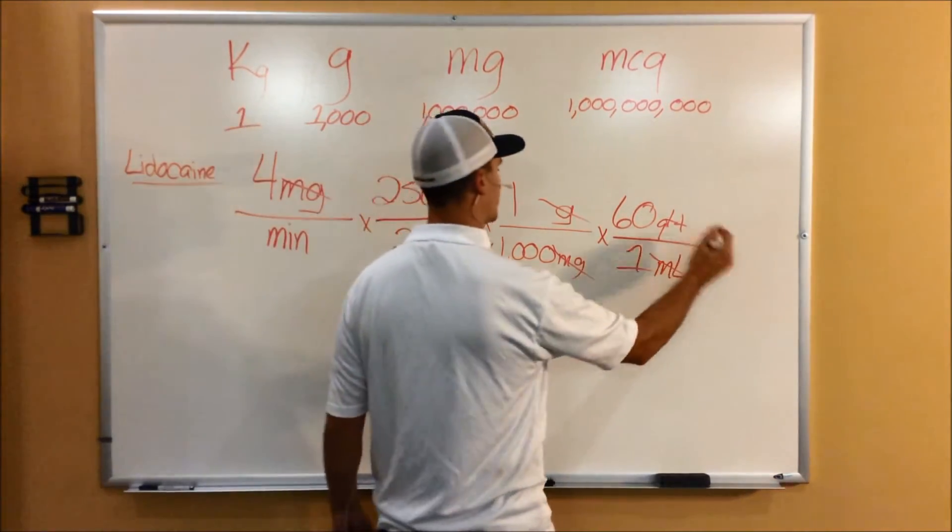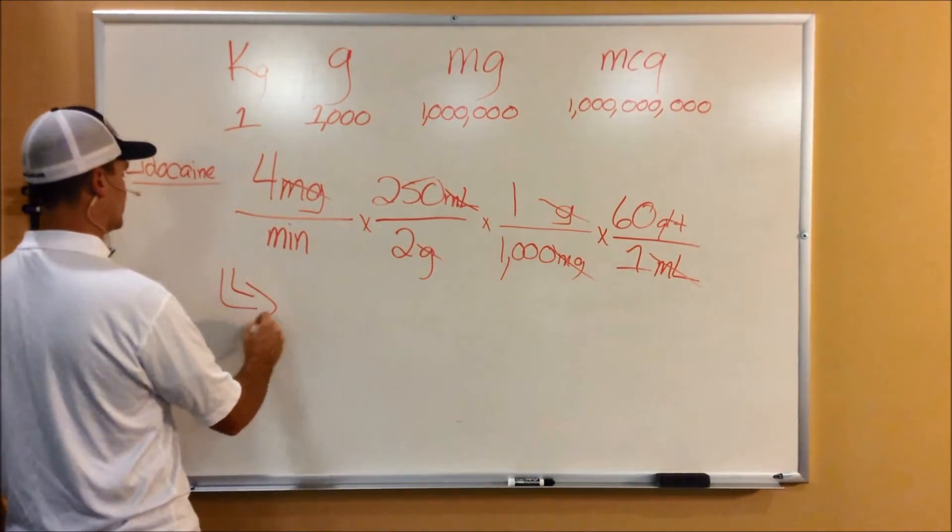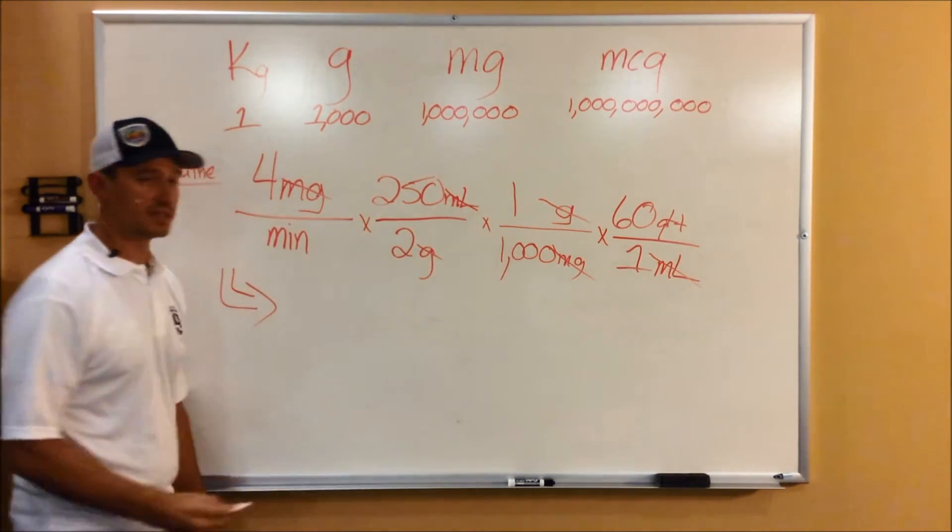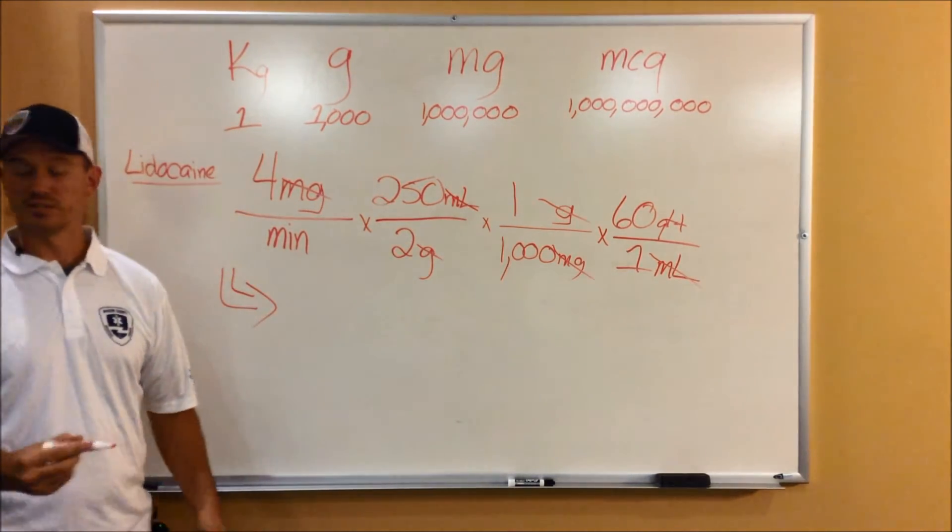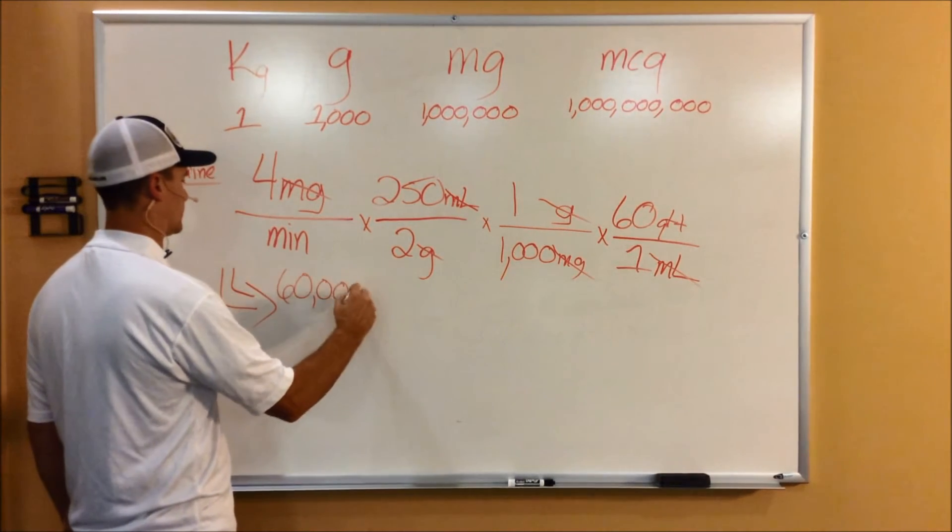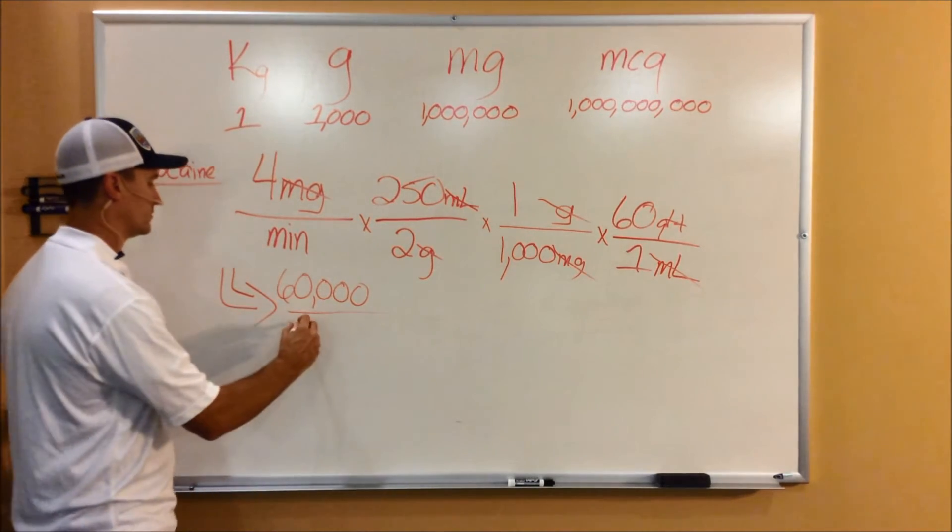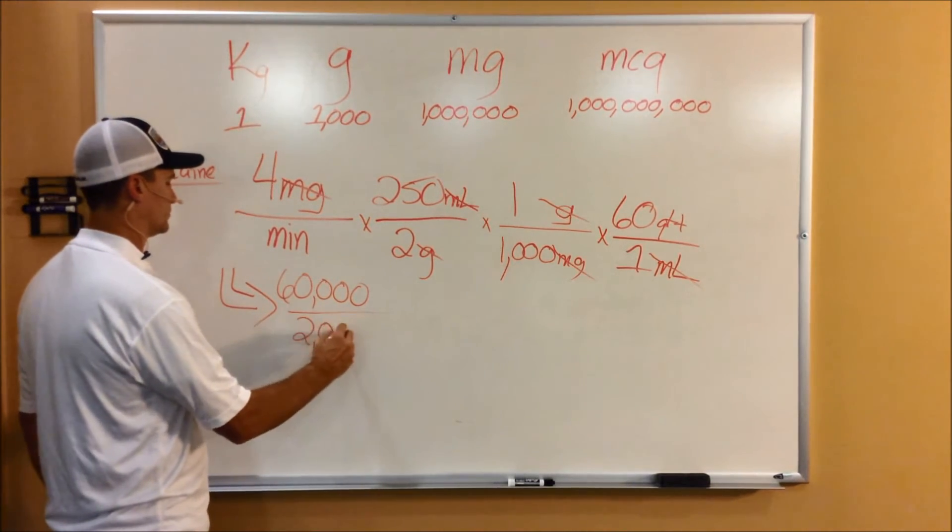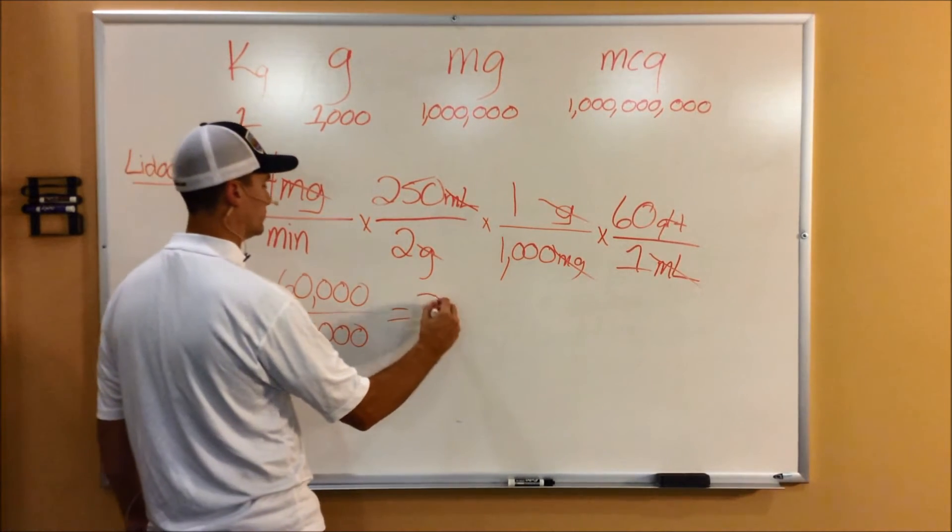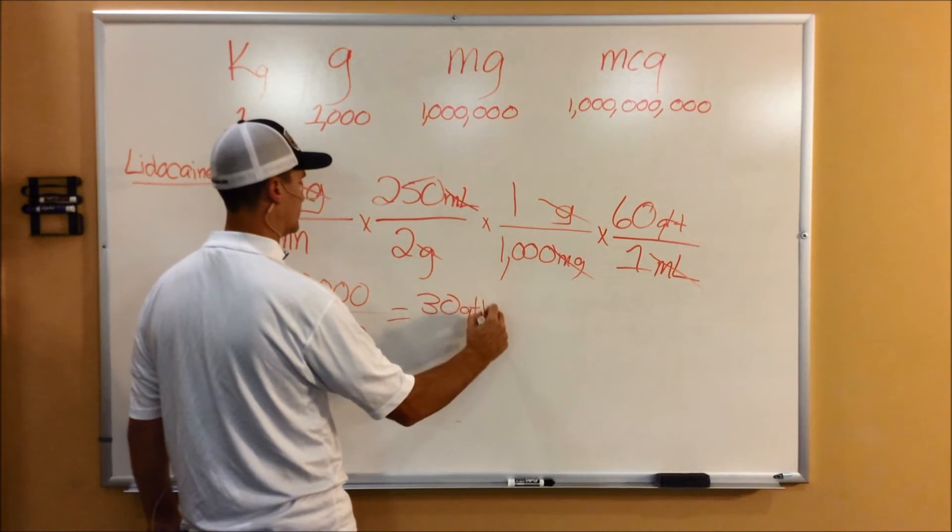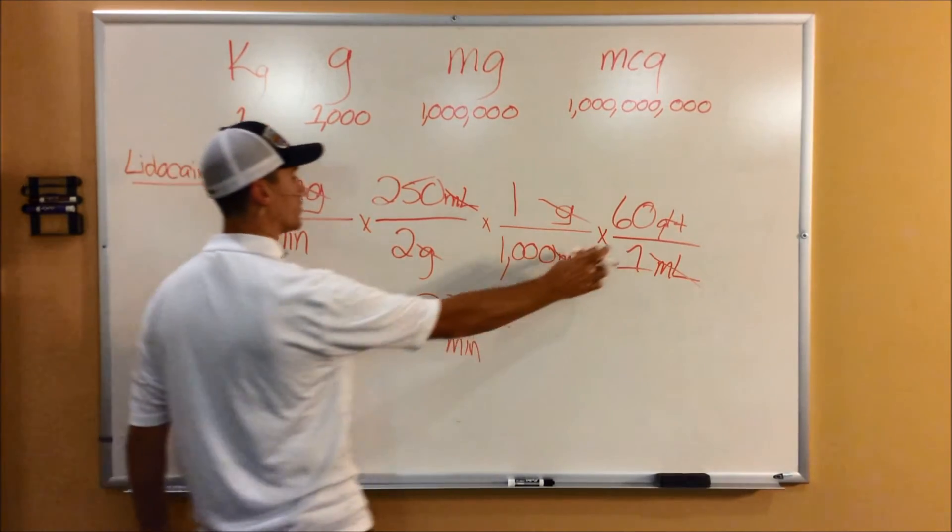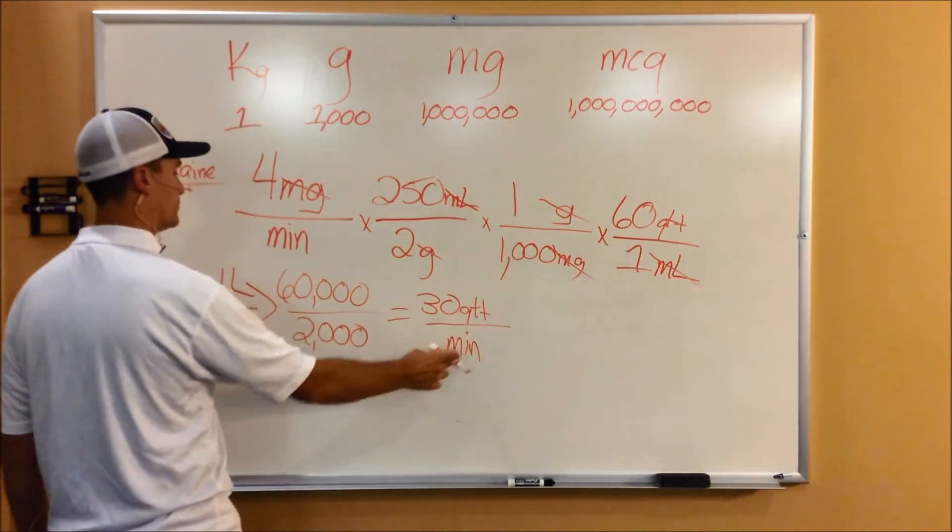Now it's to the point where you've got to calculate it out. So to do the easy stuff, come on down to here. So you're multiplying your 4 times 250 times 60. So you're doing it out on calculations. 60,000 over 2,000. And you solve that out. 30. 30 drops per minute. Because you're still at your units here, drops on the top per minute.